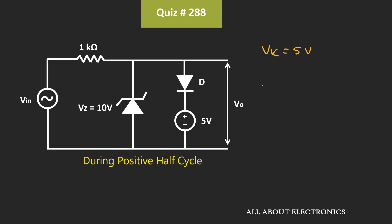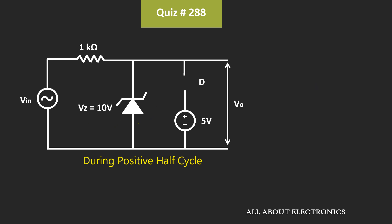Whenever the input voltage is between 0 to 5.7V, these both diodes will act as an open circuit. And at that time, the output voltage Vout is equal to the input voltage Vin.